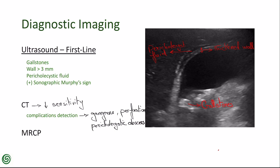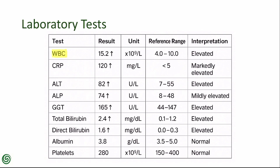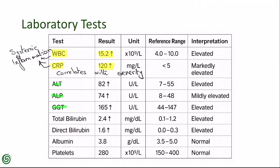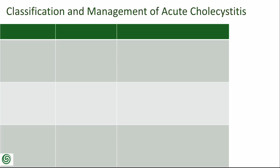Magnetic resonance cholangiopancreatography (MRCP) is reserved for cases with suspected biliary tree involvement, such as choledocholithiasis. It provides excellent anatomical detail without contrast. Lab findings support the diagnosis but are nonspecific. Elevated white blood cells indicate systemic inflammation or infection. High C-reactive protein correlates with severity. Liver function tests — ALT, AST, ALP, and GGT — may be elevated if there is common bile duct involvement. Total and direct bilirubin may rise in complicated cases with cholestasis and choledocholithiasis.